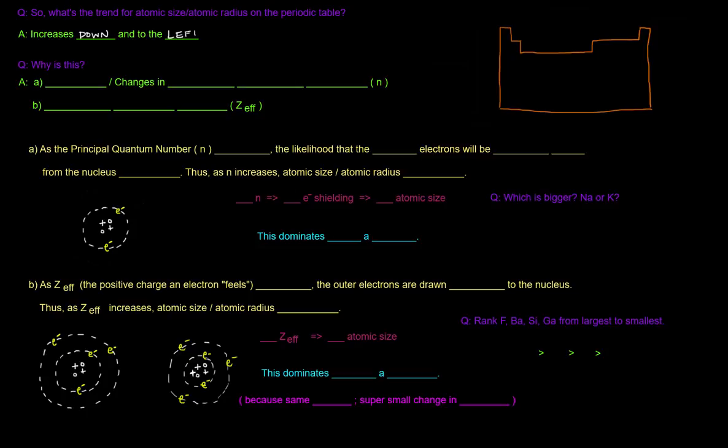So we see that here on the periodic table, as we go to the left, the atomic radius will increase, and as we go down, it'll increase. So at the bottom left of the periodic table, we have the largest atoms, and at the top right, we have the smallest atoms.